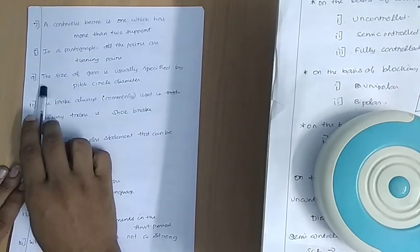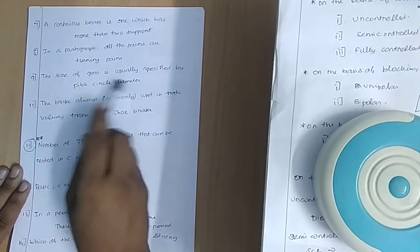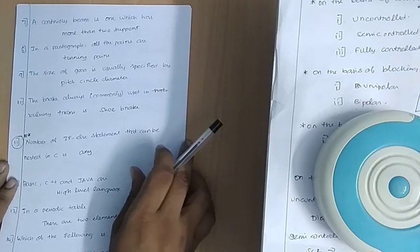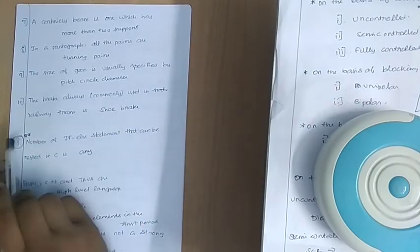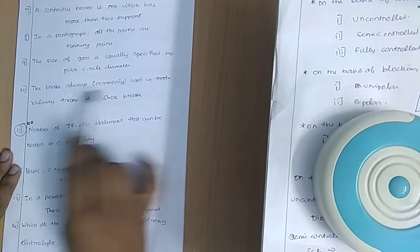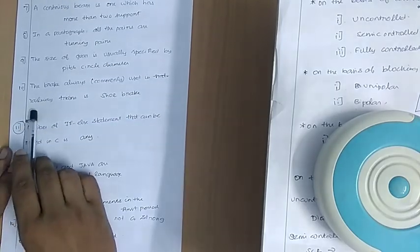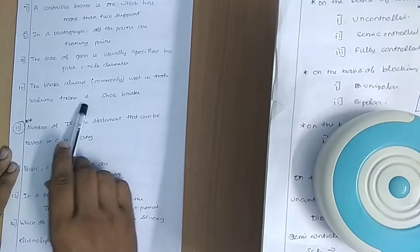The size of gear is usually specified by its circle diameter. The brake most commonly used in railway trains is the shoe brake.